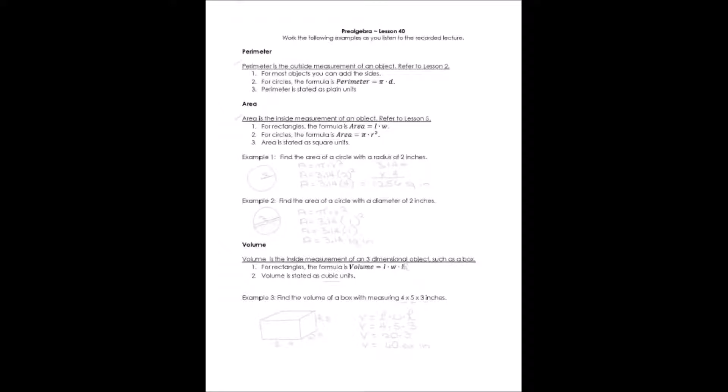We've talked a little bit in this class about perimeter and area before, but I want to go over them just one more time and sort of summarize it for you, along with another measurement that we use, which is volume. To summarize, perimeter is the outside measurement of an object, and that's back in lesson two that we started talking about it. For most objects, all you have to do is add the sides up to get the perimeter, but for circles, you can't add the sides. The formula is perimeter equals pi times diameter. And when we state perimeter, we always state it as plain units.